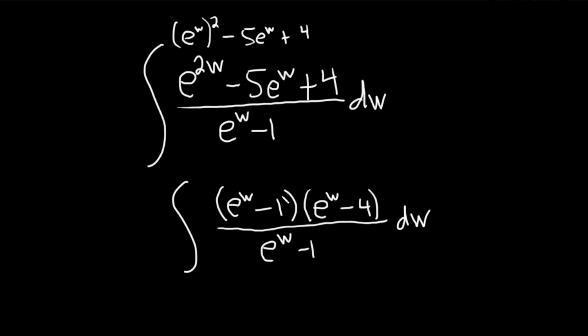And then the middle piece is negative e to the w. The outer piece is negative 4 e to the w. And when you add these pieces, you get the middle piece. That's always going to work. The product of the inner and the outer is going to give you the middle term whenever you have a product of two binomials like this.